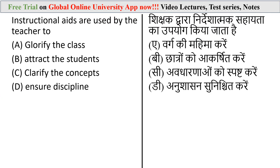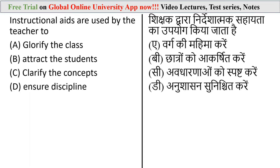Question: Instructional aids are used by the teacher in the classroom to do what? Options: glorify the class, attract students, clarify the concept, or ensure discipline. Instructional aids are used to encourage learning and make it easier and more interesting. Materials like charts, maps, models, film strips, projectors, radio, and television help the teacher for effective teaching. The correct answer is option C — instructional aids are used by the teacher to clarify the concept.